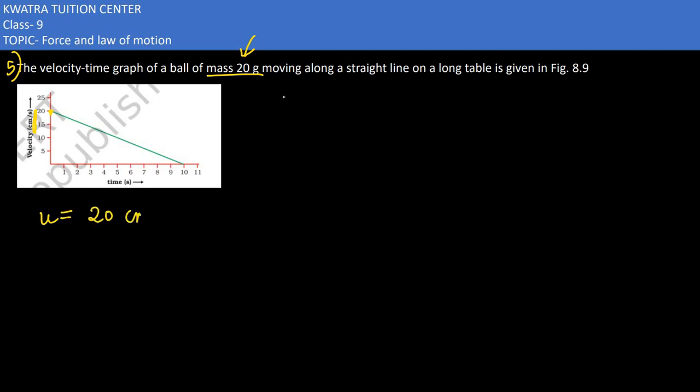If we read this graph, the initial velocity u is 20 centimeters per second. Converting to meters, divide by 100 to get 0.2 meters per second. The final velocity v is 0 meters per second.